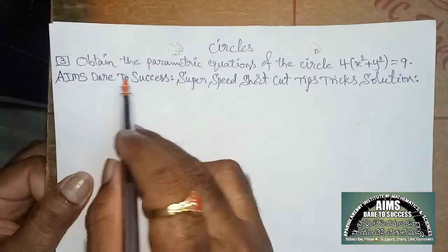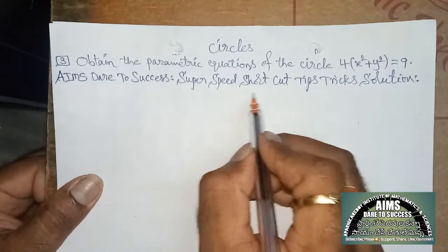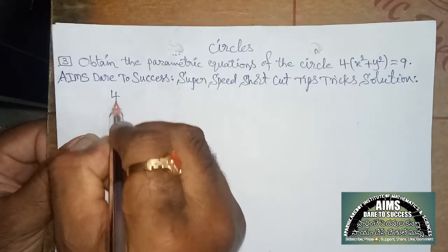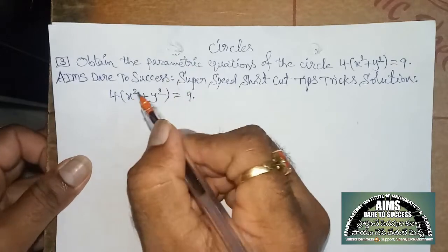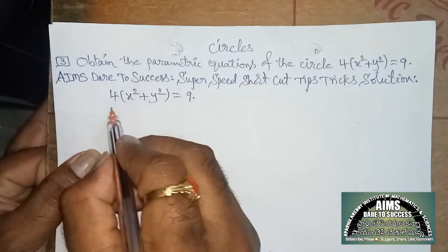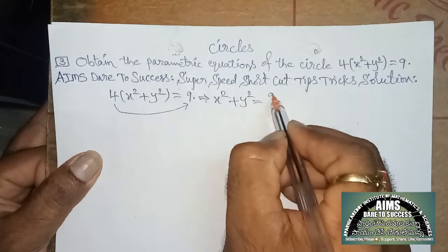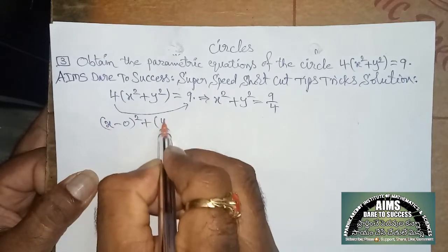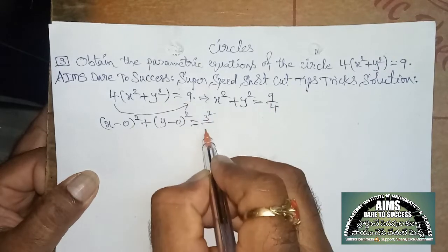One more similar question: obtain the parametric equation of the circle 4(x² + y²) = 9. Super speed shortcut tips and tricks — solution within 10 seconds only. The given equation is 4(x² + y²) = 9. Since the coefficients of x² and y² must equal 1, we divide both sides by 4 to get x² + y² = 9/4. This can be written as (x − 0)² + (y − 0)² = 3²/2².